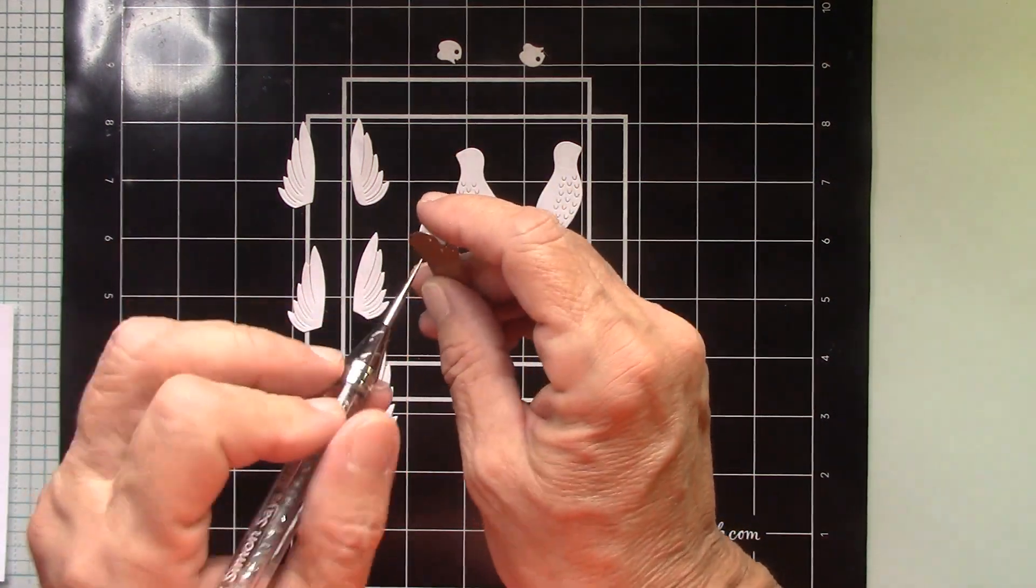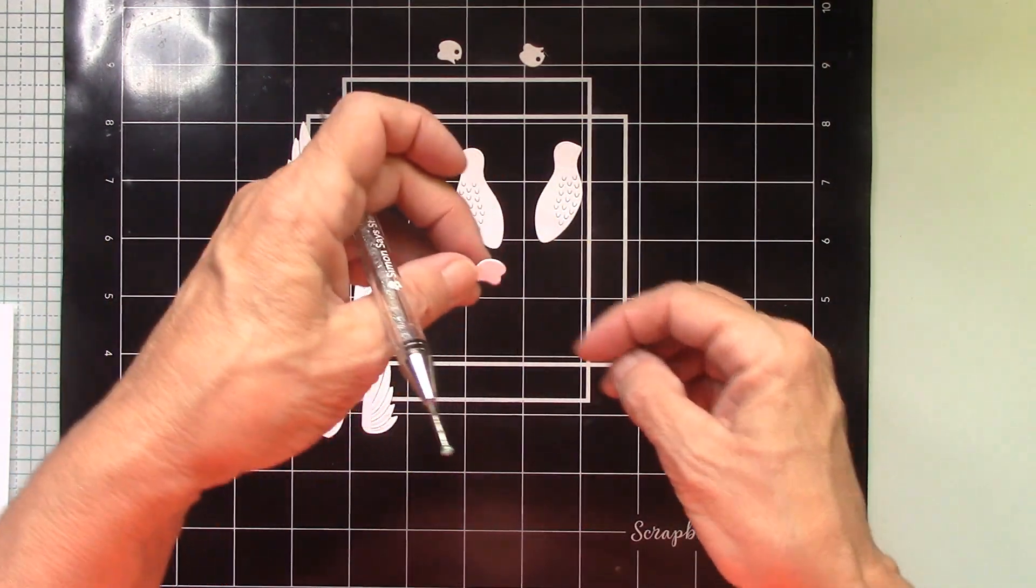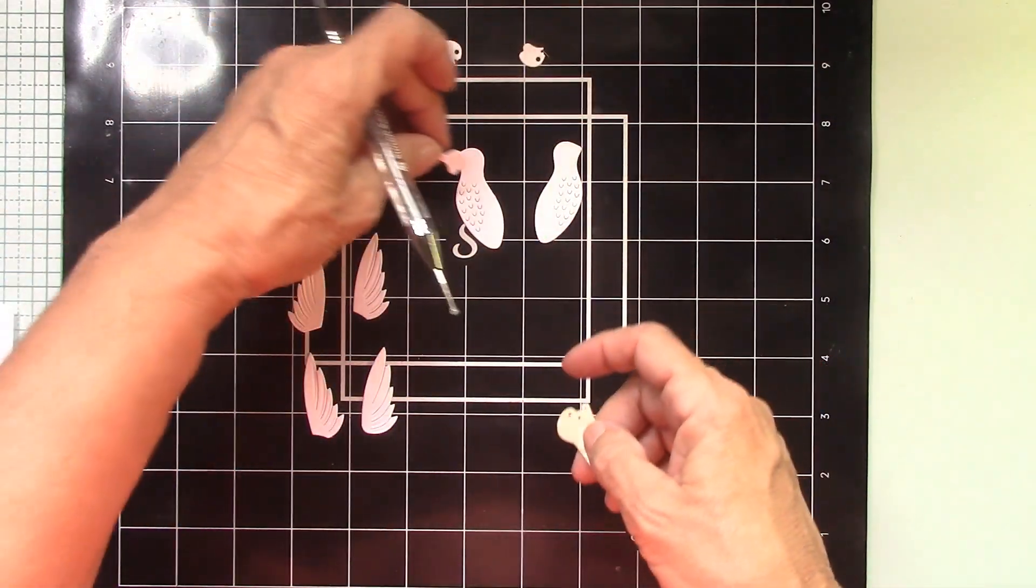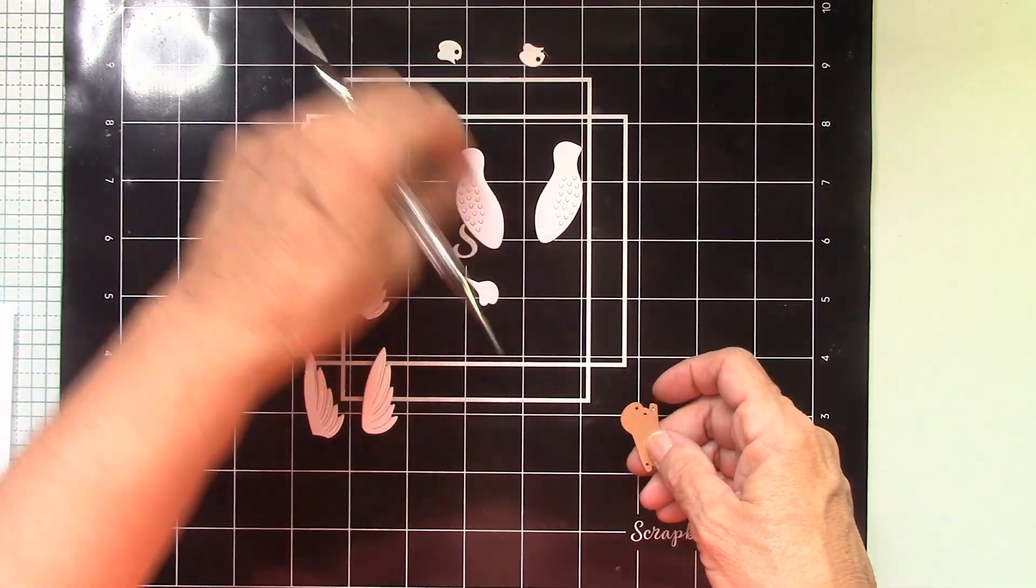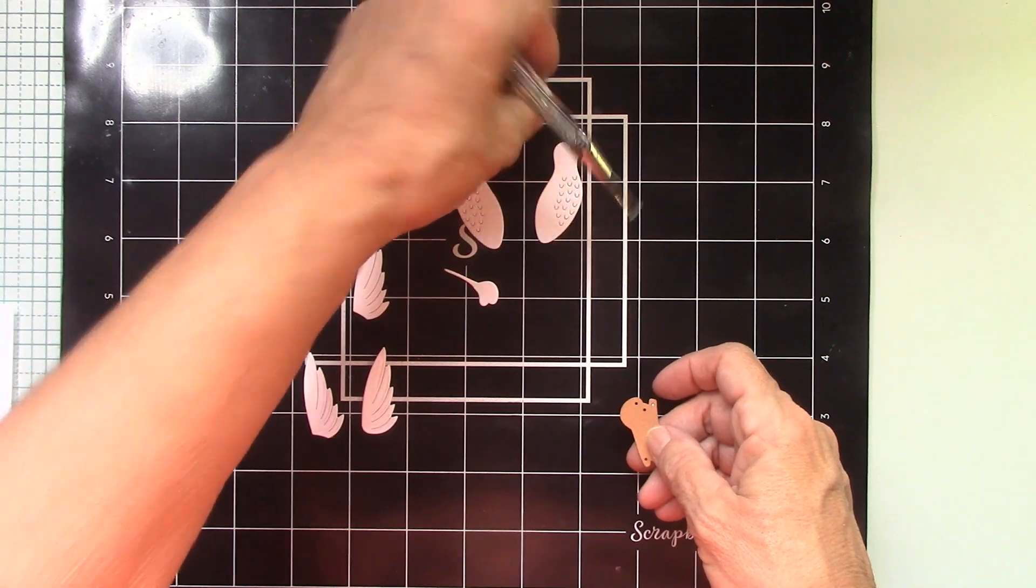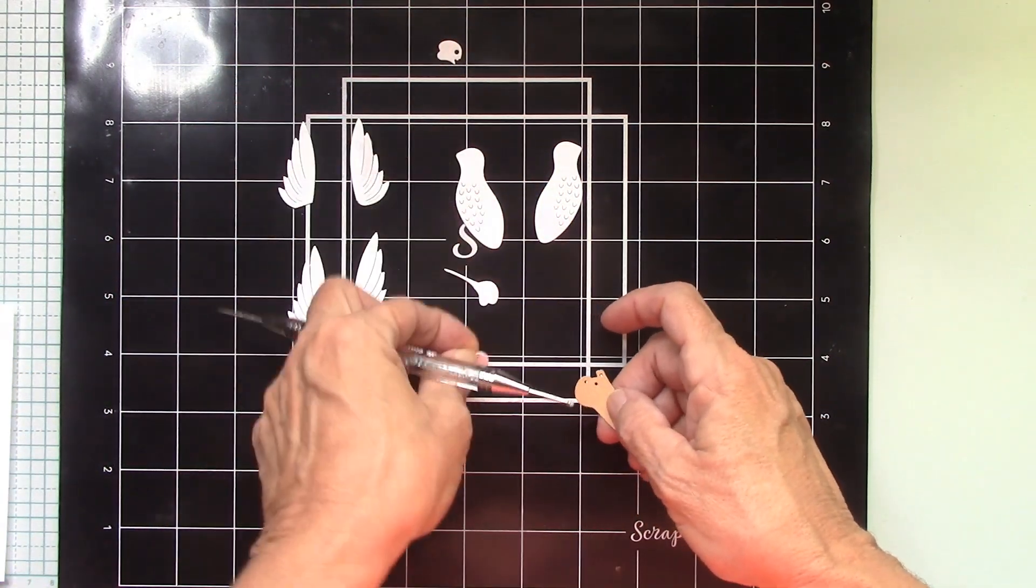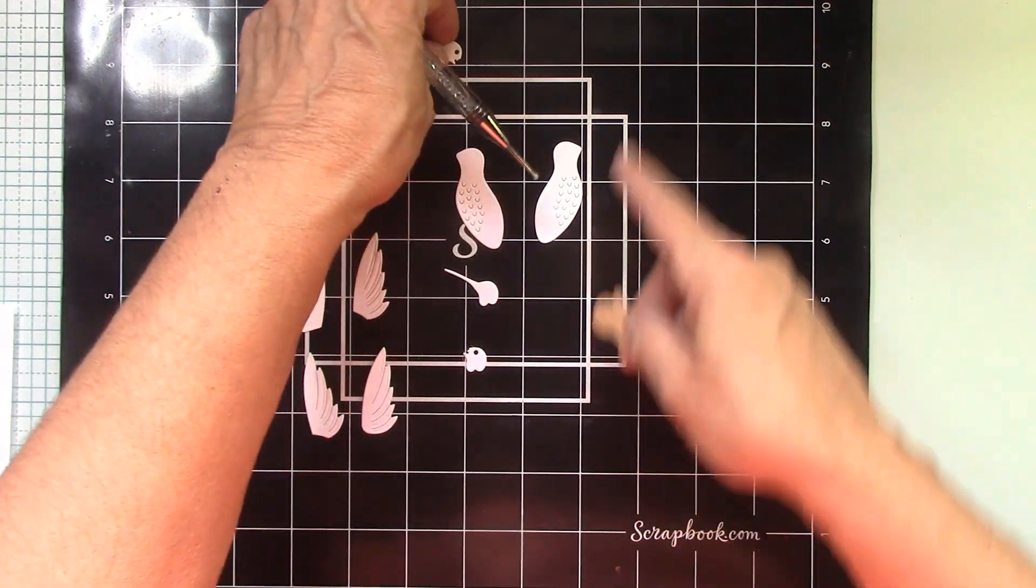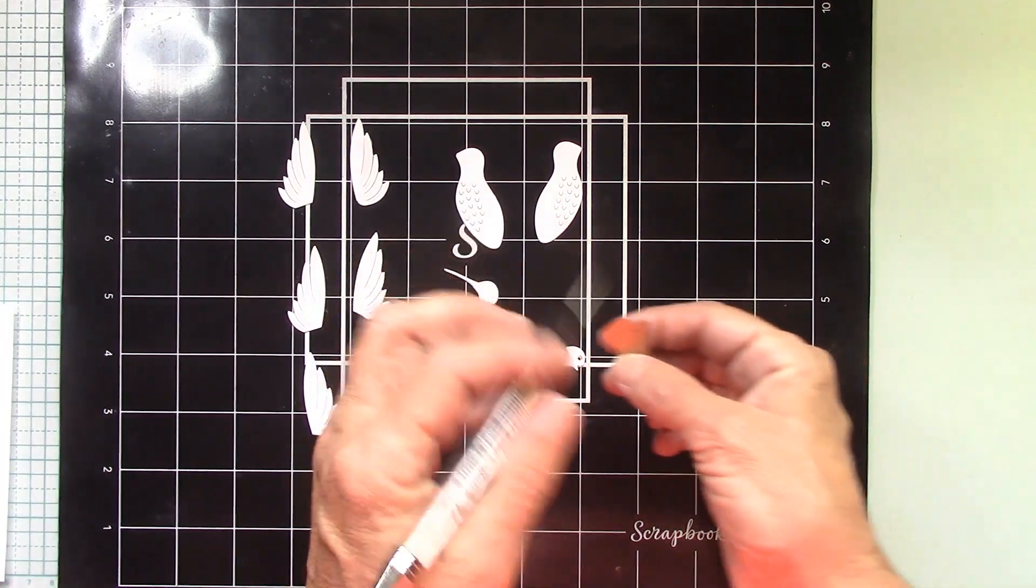The birds go either way. You know, each way I should say. And so with that being said, watch because the heads go a certain way also. Like see, this one can't go here. The beak's going out the wrong way. This one goes with that one. Then this head goes with that. Okay. Do you see? Everything's facing that direction. Now I've got to put everything this direction.